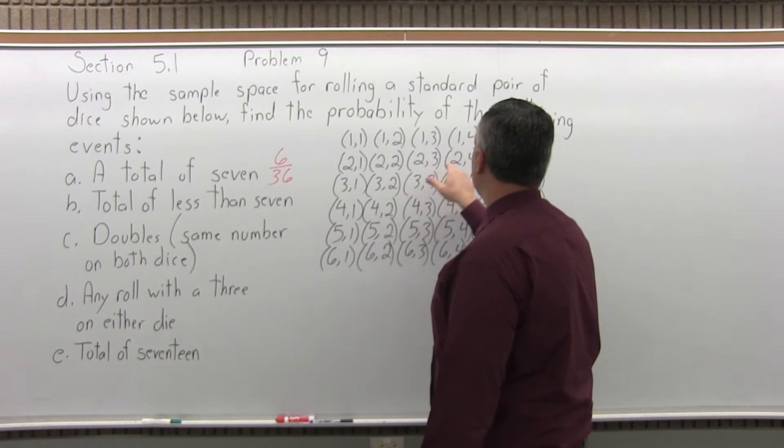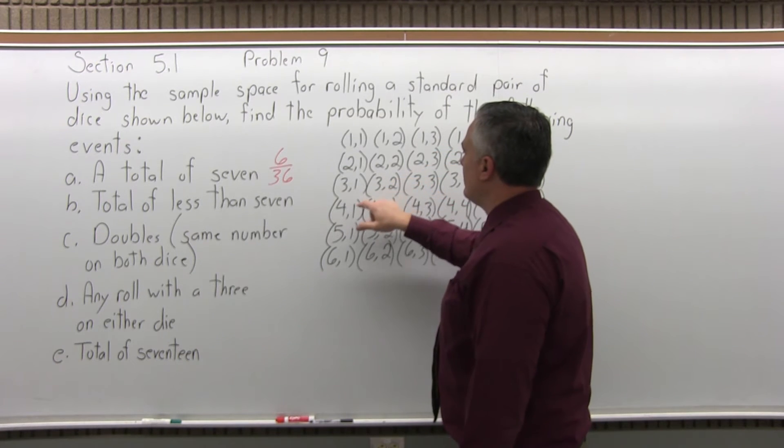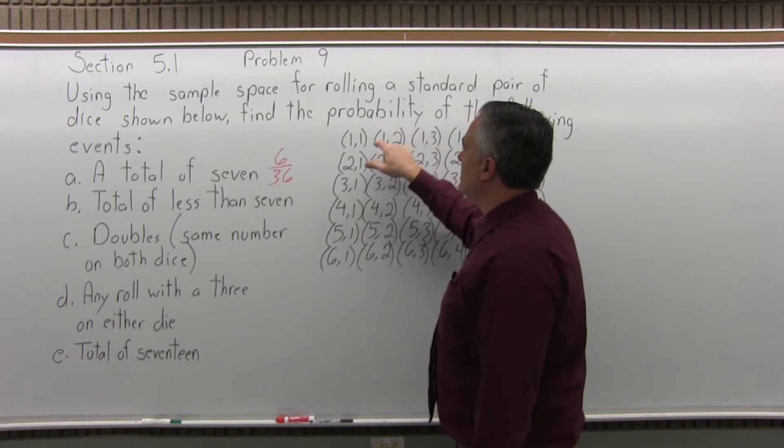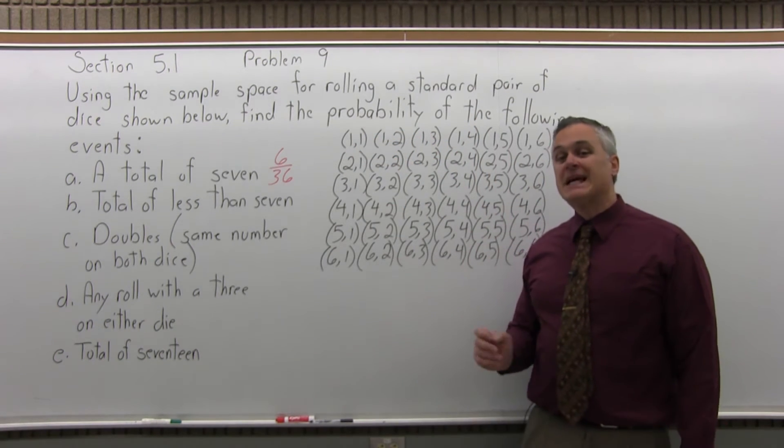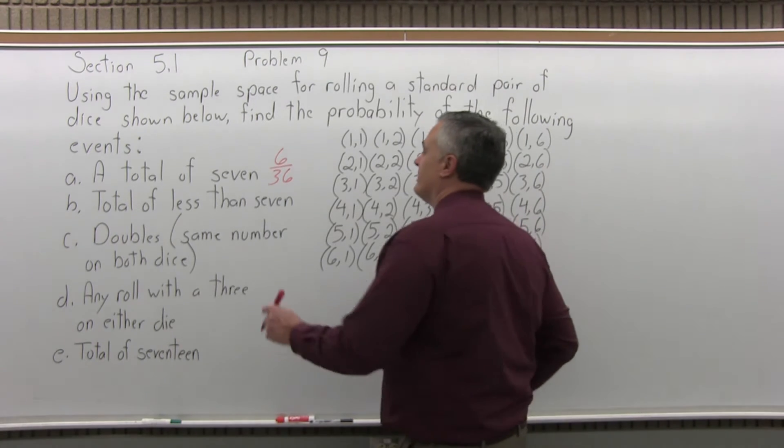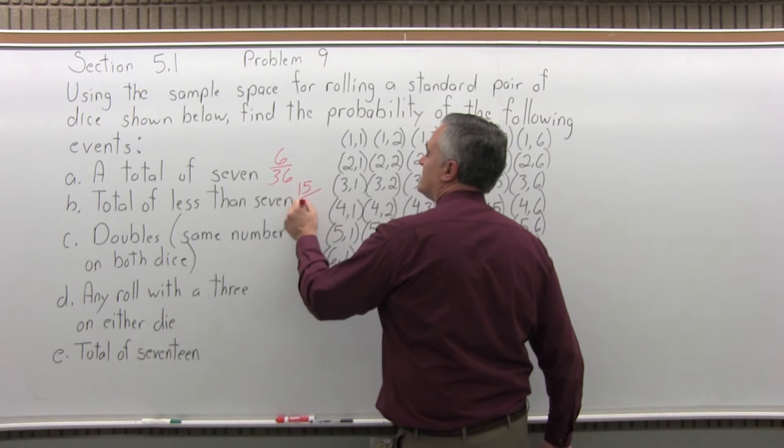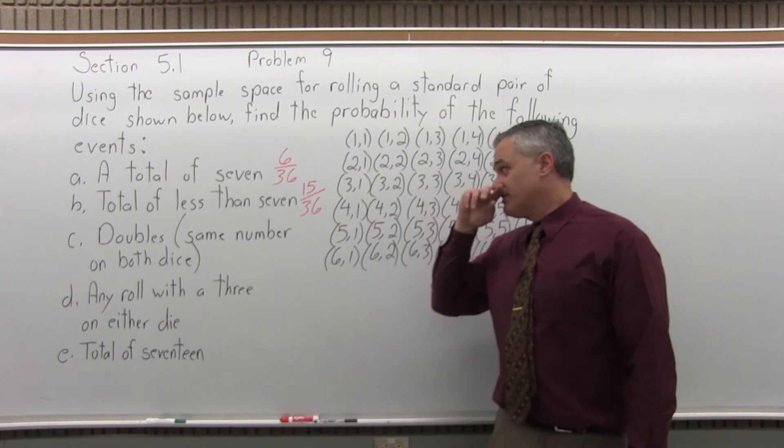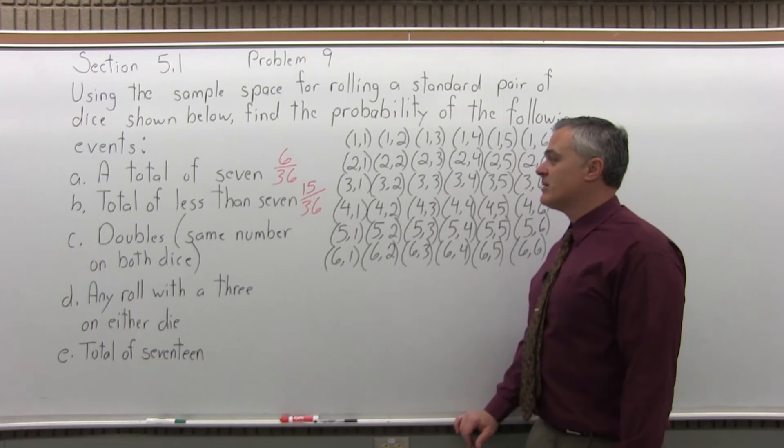So we have 1, 2, 3, 4, 5, 6, 7, 8, 9, 10, 11, 12, 13, 14, 15 rolls give you a total of less than 7 when you roll a pair of dice. So 15 rolls give you a total of less than 7 out of 36 rolls that you can get all together. Can be reduced, they both are divisible by 3. You can turn it into a decimal or leave 15 over 36.